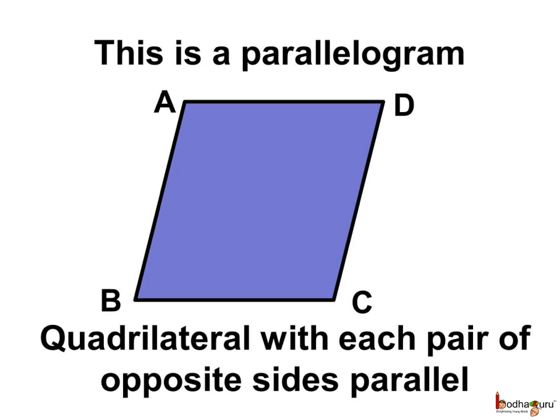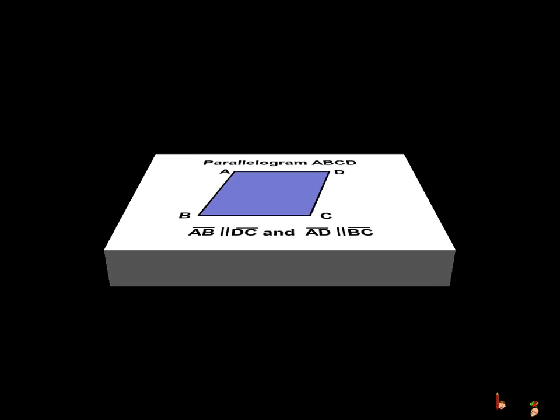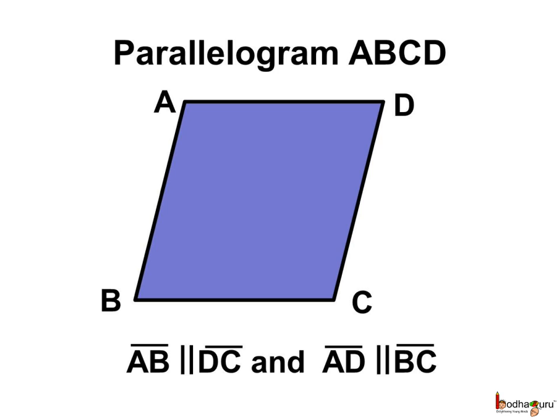Here, AB is opposite to DC and AB is parallel to DC. Similarly, the opposite sides AD and BC are parallel. This type of figure is called a parallelogram. So this figure is called parallelogram ABCD, with each pair of opposite sides parallel.